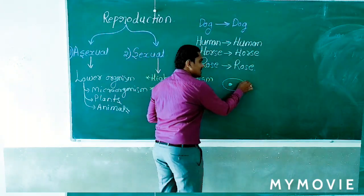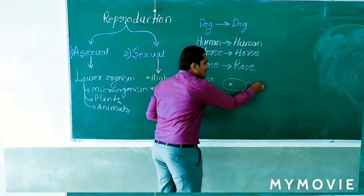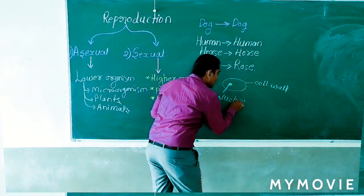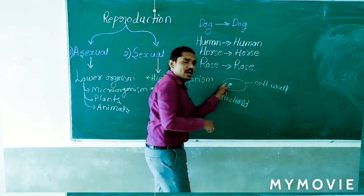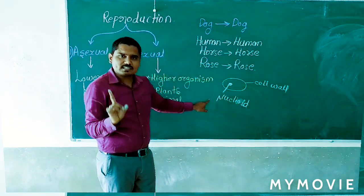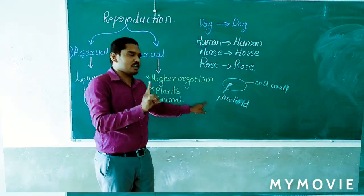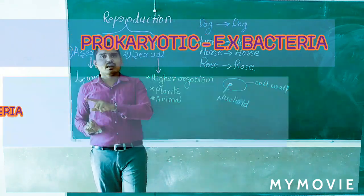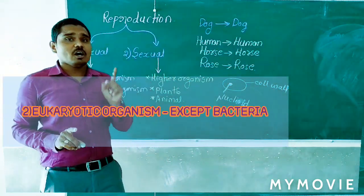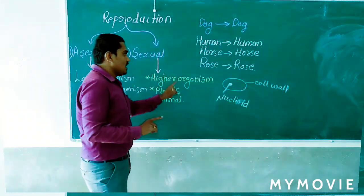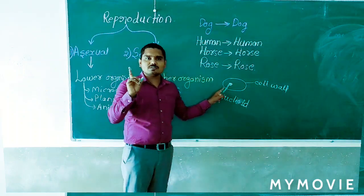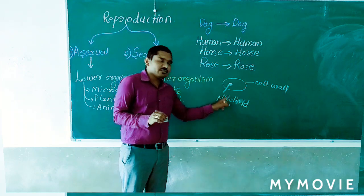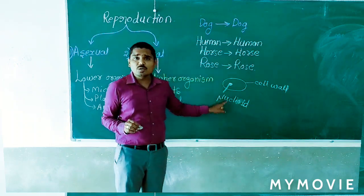In bacteria, there is a cell wall and inside the bacteria they form a nucleoid — they don't have a true nucleus. On the basis of nucleus, organisms are divided into two types: prokaryotic organisms and eukaryotic organisms. In prokaryotic organisms, they don't have a true nucleus, but they have DNA in the form of a nucleoid.